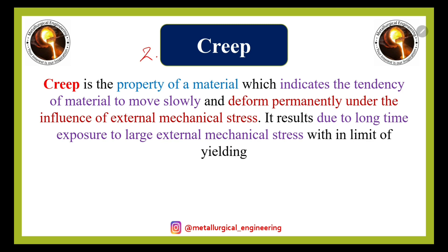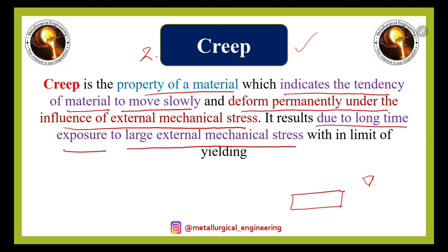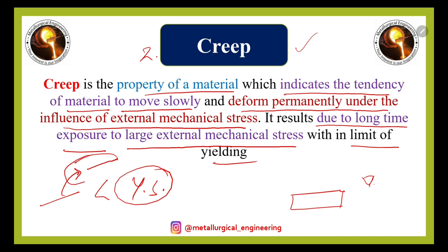Another time-varying mechanical property is creep. Creep occurs when any load is applied to a material for a very prolonged period of time, causing the material to slowly and permanently deform. By definition, creep is the property of a material that indicates the tendency of the material to move slowly and deform permanently under the influence of mechanical stress — below the yield strength — over a long period of time.